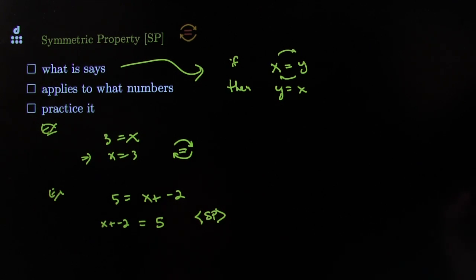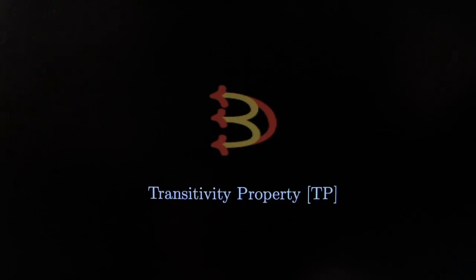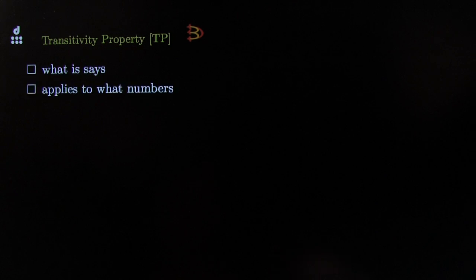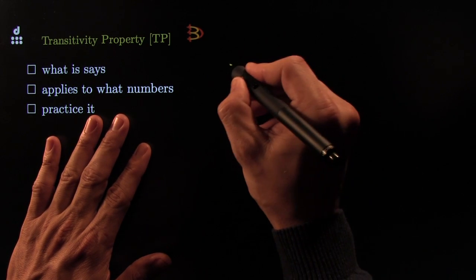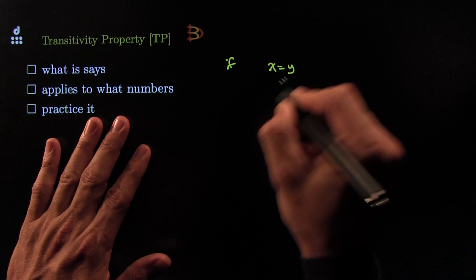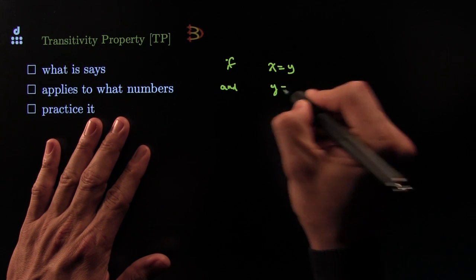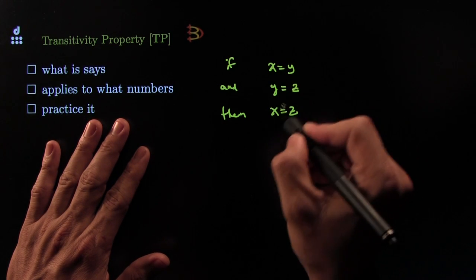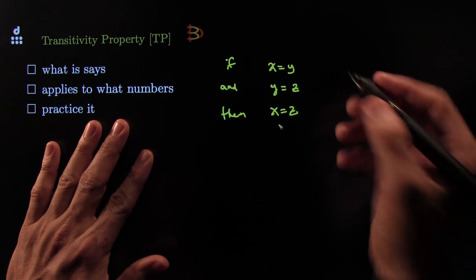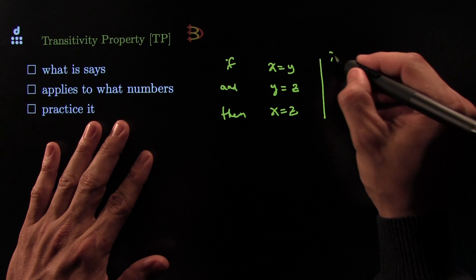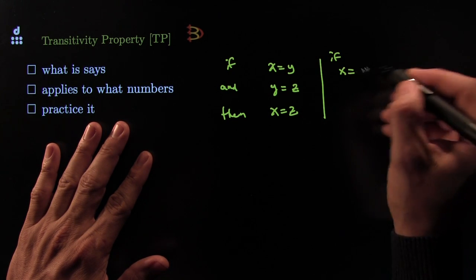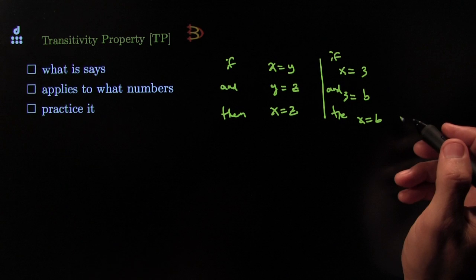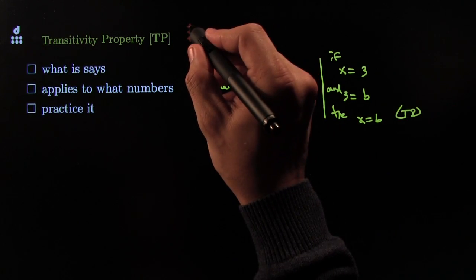One more — let's do the Transitivity Property. I want to explain what it says, what numbers it applies to, and practice it. What it says is: suppose x is equal to y, and y is equal to z. Well then, since x equals y and y equals z, I can say that x must be equal to z. This one sort of glues together all the things that are equal. If x is equal to three, and three is the same as b, well then x must be the same as b. The icon should help you remember — the first one must equal the last one.